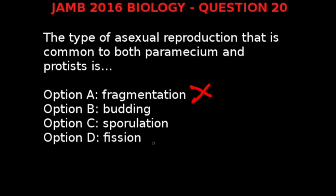Our question asks for the common mode of reproduction between protists and paramecium. Paramecium reproduces sexually by conjugation and asexually by binary fission. So the common form of reproduction between paramecium and protists is option D, fission.